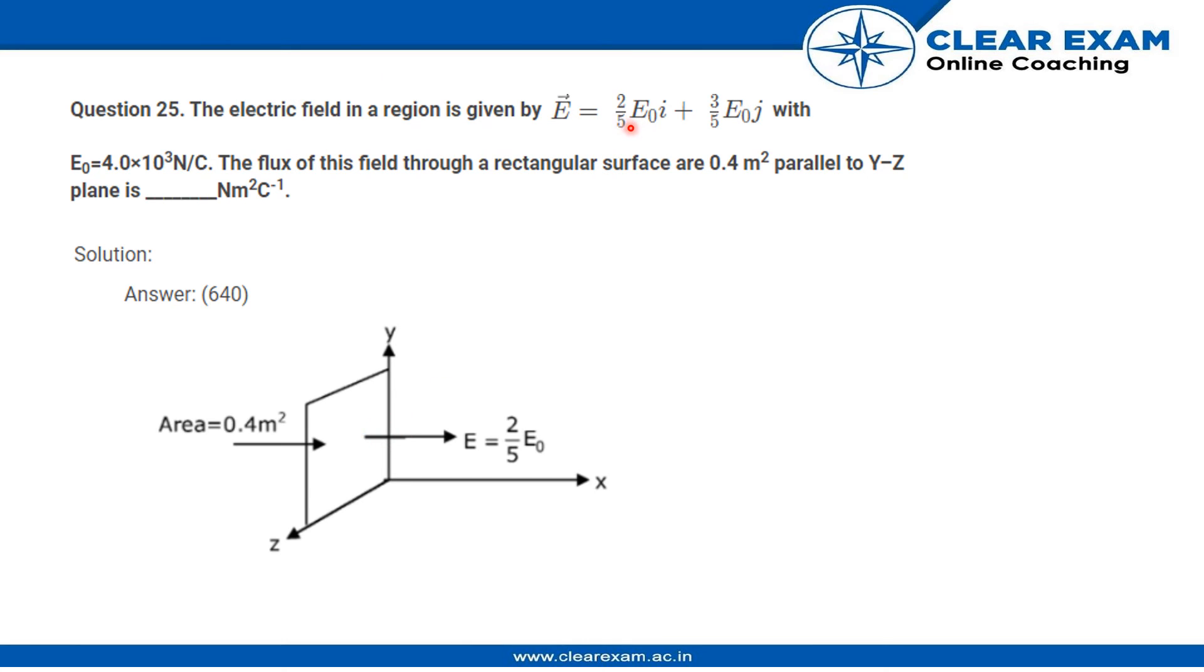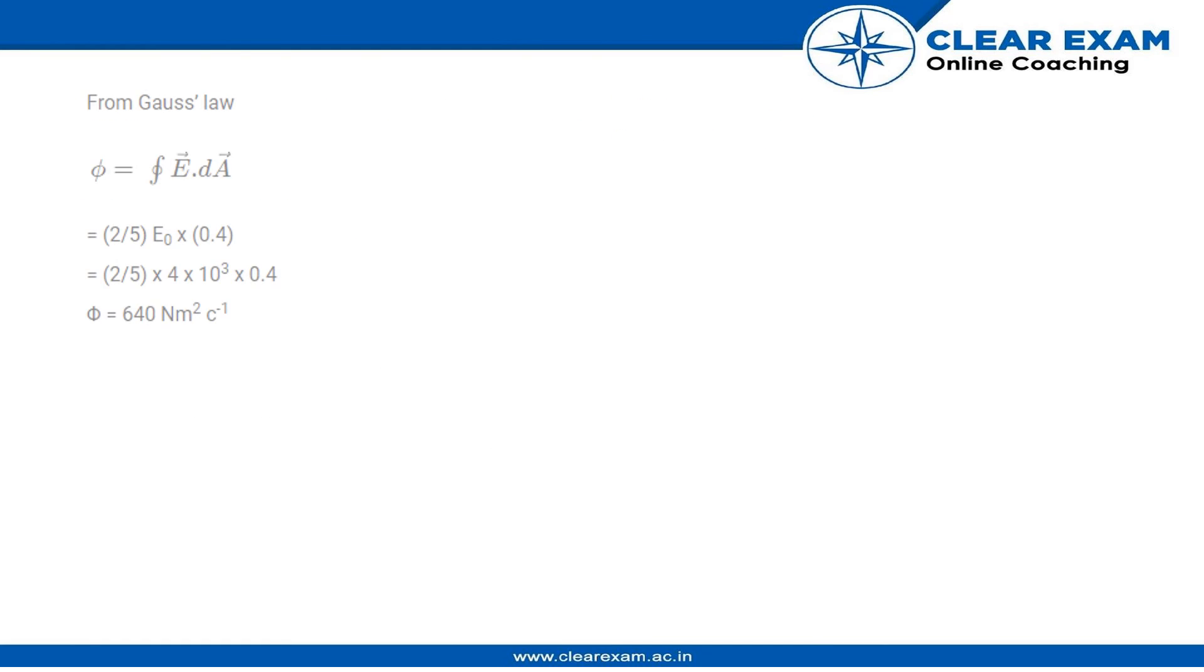Therefore, the flux will only be created by the electric field in the x direction, that is 2/5 E₀. We have Φ equal to the integration of E dot dA, which equals 2/5 times E₀ times dA, that is 0.4. So we have the value of flux equal to 2/5 times 4 × 10³ times 0.4. Therefore, the value of flux comes out to be 640 newton meter square per coulomb.